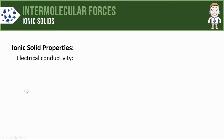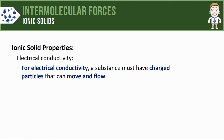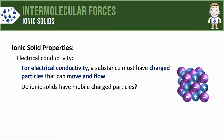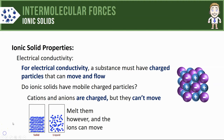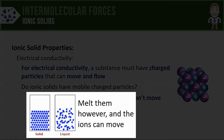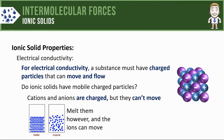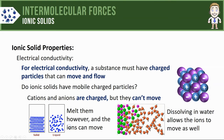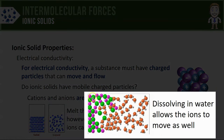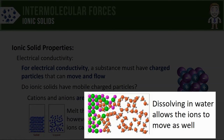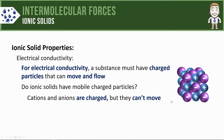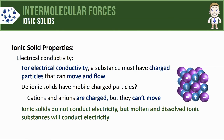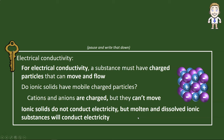Next, let's take a look at electrical conductivity. For a substance to conduct electricity it needs to be made of charged particles that can move and flow. Ionic solids do have cations and anions which are charged, but in the solid state they can't move, so ionic solids will not conduct electricity. However, if you melt them, the ions in the liquid state can move around and conduct electricity. A similar thing happens when you dissolve ionic substances — the ions separate and move through the water, allowing electricity to be conducted.